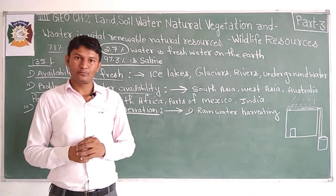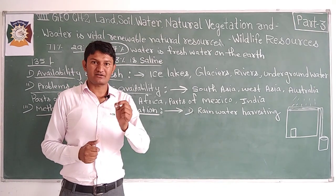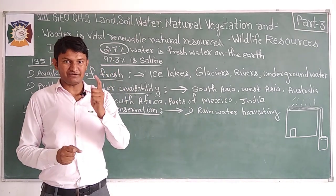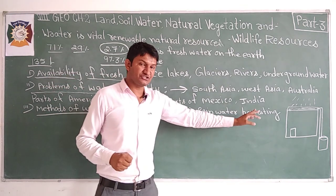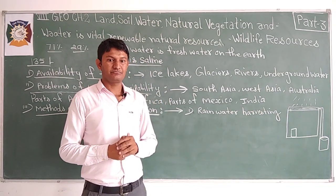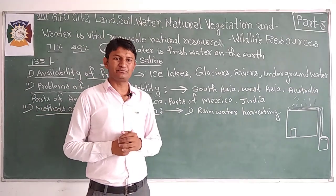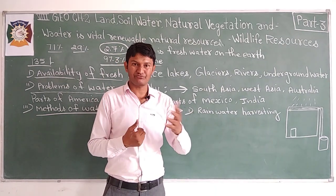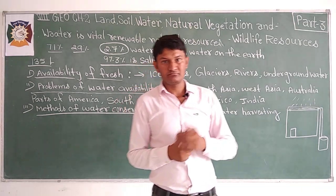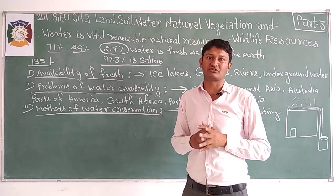One interesting fact: Tamil Nadu was the only state in India where the government made it compulsory for every house to build terraces for rainwater collection. Even places like Cherrapunji and Mawsynram, which receive the highest rainfall in the world, also practice rainwater harvesting.